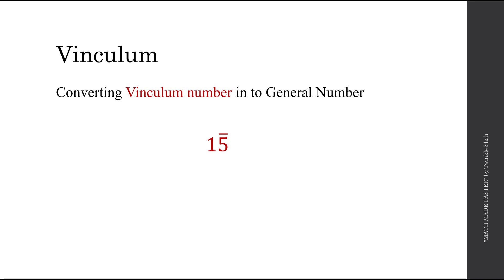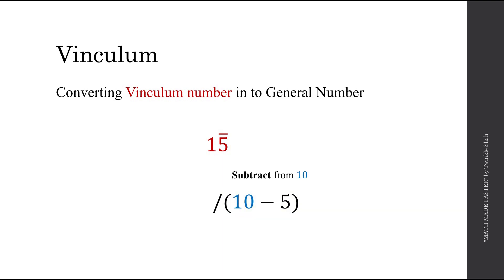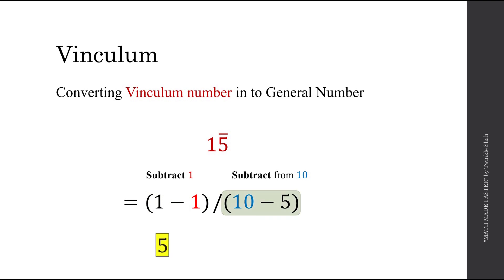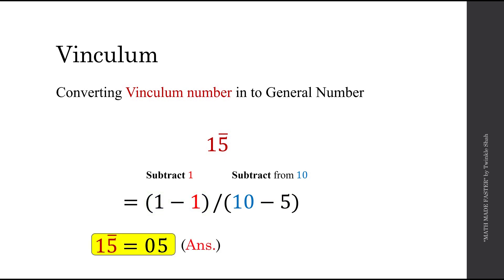For 1 5̄, we subtract 5 from 10, giving 10 minus 5, and subtract 1 from the previous digit, giving 1 minus 1. Simplifying: 10 minus 5 equals 5, and 1 minus 1 equals 0. Therefore 1 5̄ equals 05.